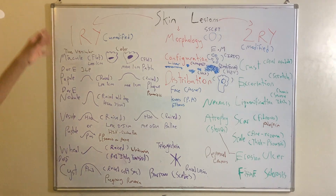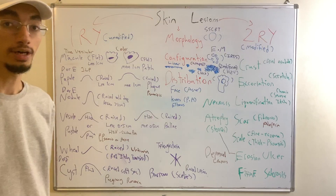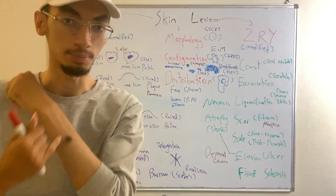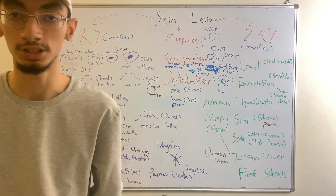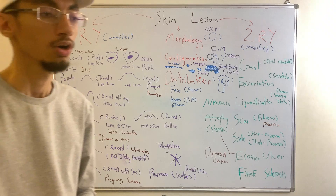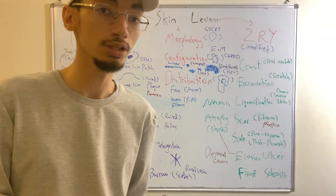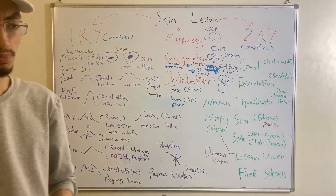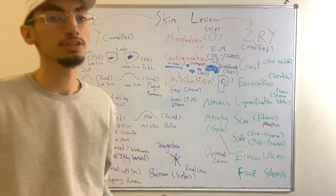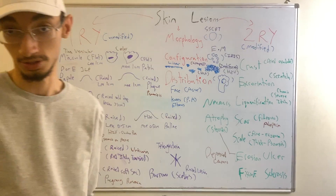Before discussing the primary and secondary skin lesions, we need to be able to describe a skin lesion — for example, this macule right here. This is known as morphology. In order to describe a skin lesion, we need to be organized, visually assess it, be able to touch it, and then describe it using proper dermatological terms — for instance, 'erythematous' instead of just 'red,' or the appropriate term for a raised lesion.